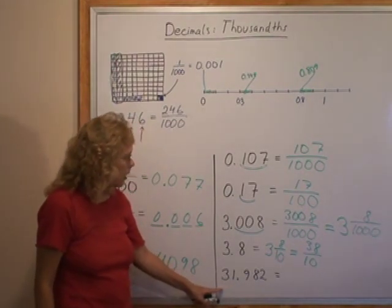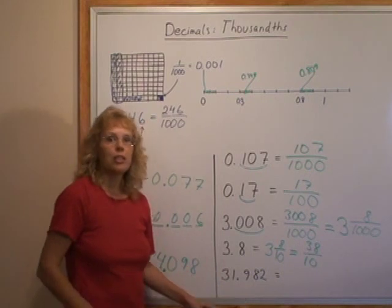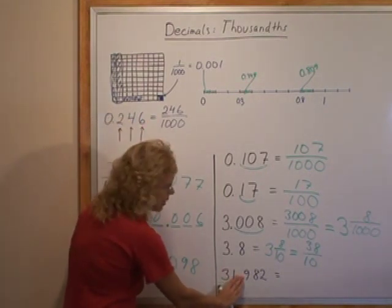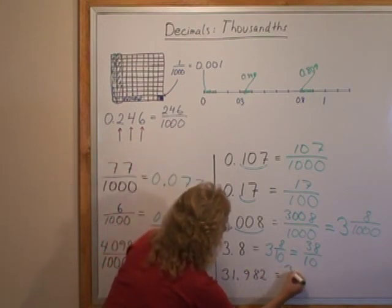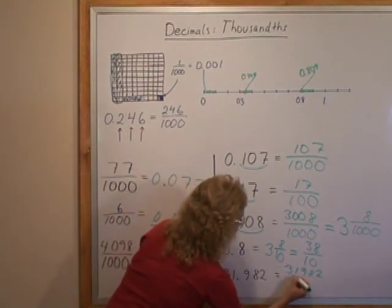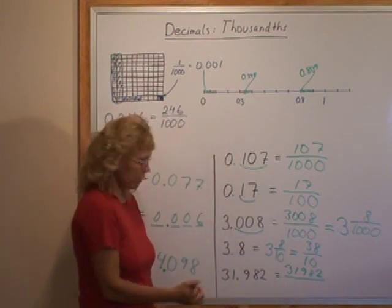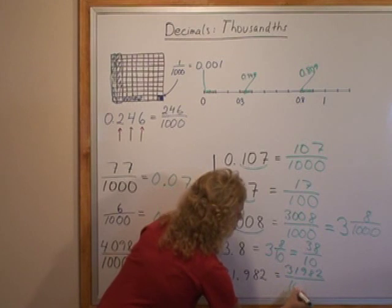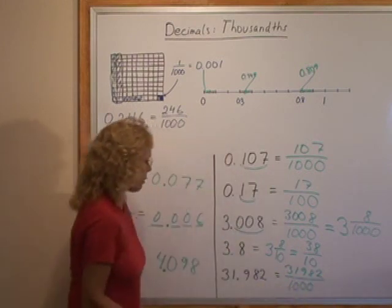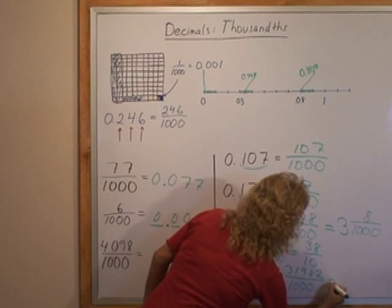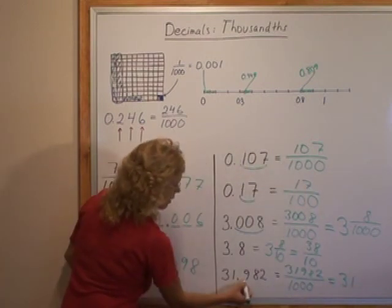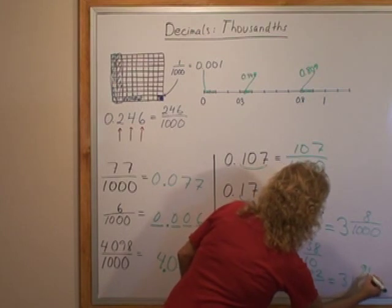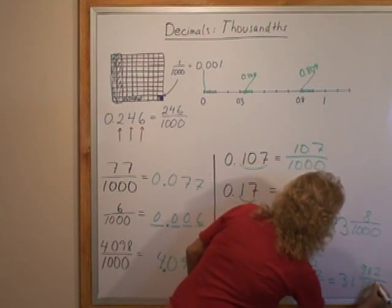Lastly this long number. It may look difficult but to make it into a single fraction, all you do is just hide the decimal point and write the whole 31,982, and then figure out your denominator which, because there's three decimal digits, we again have thousand here. As a mixed number you can take this as your whole number part, and then these three become the thousandths. There.